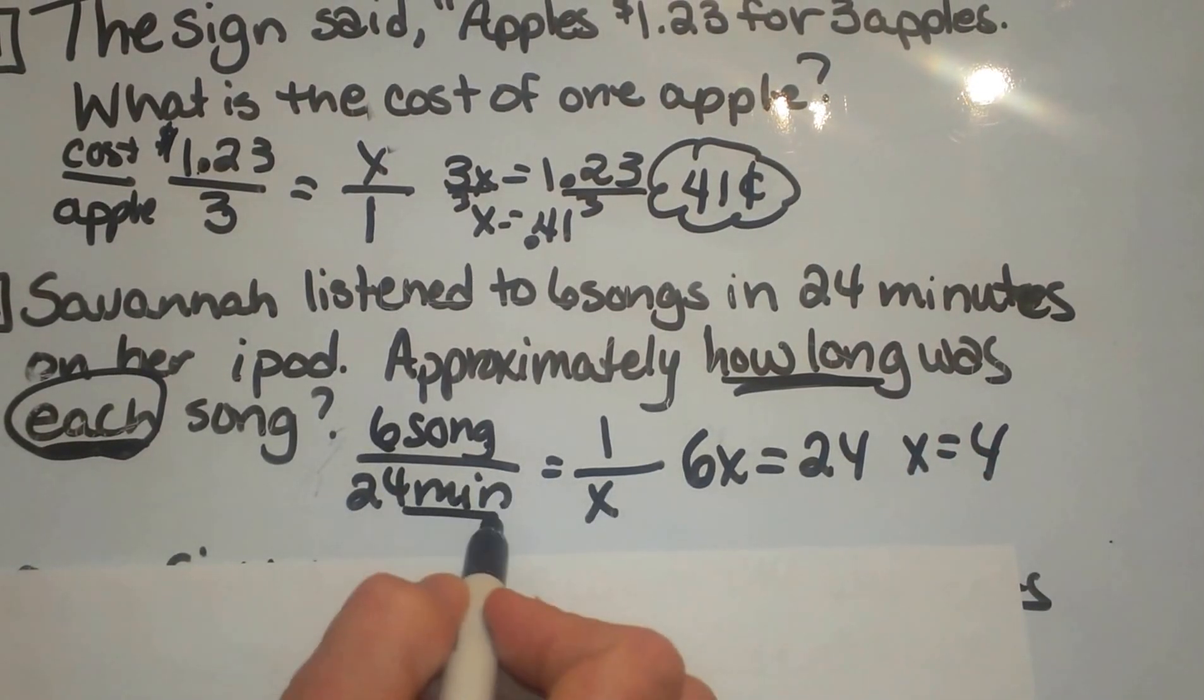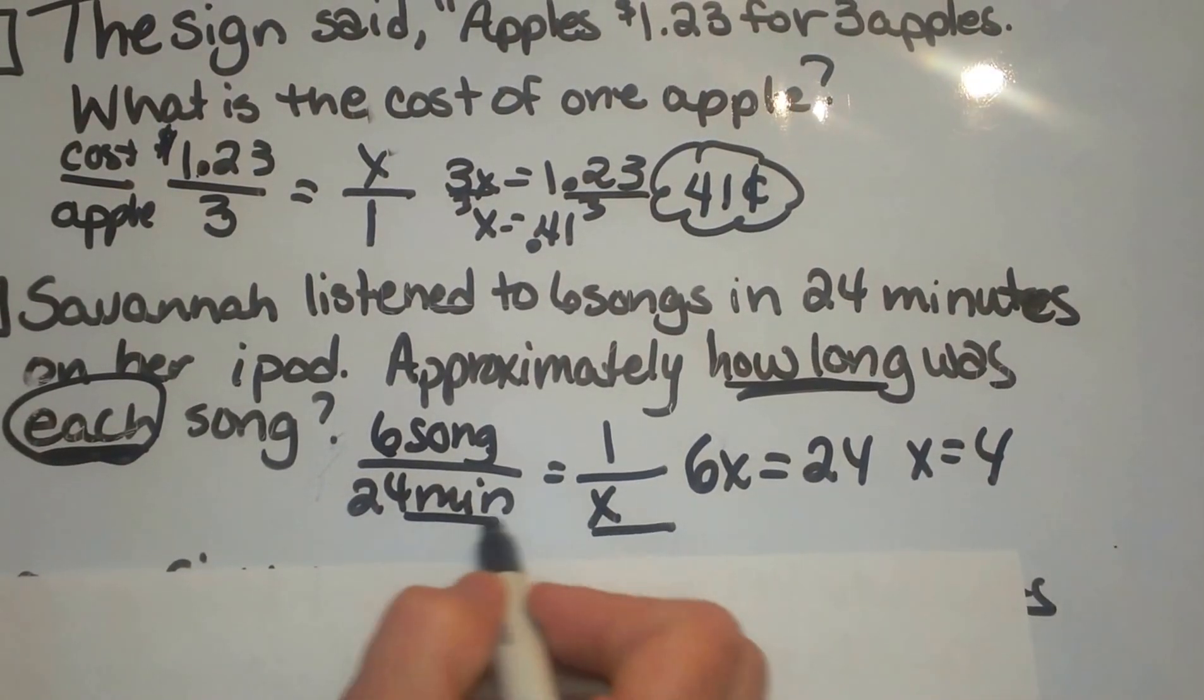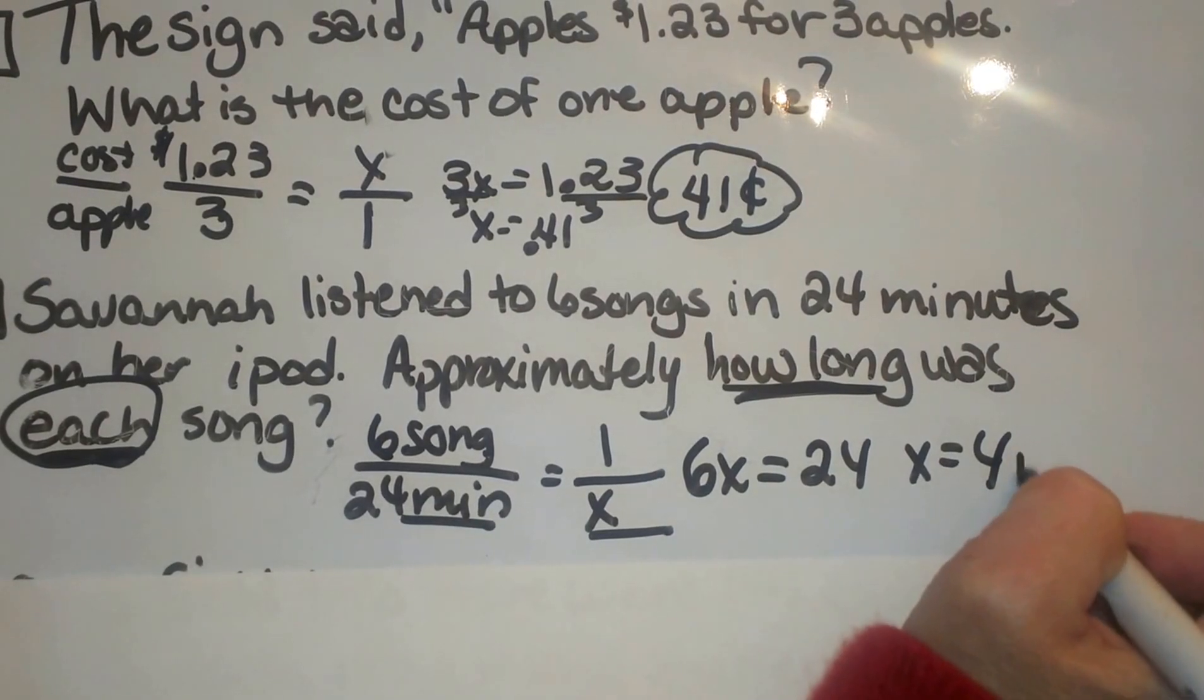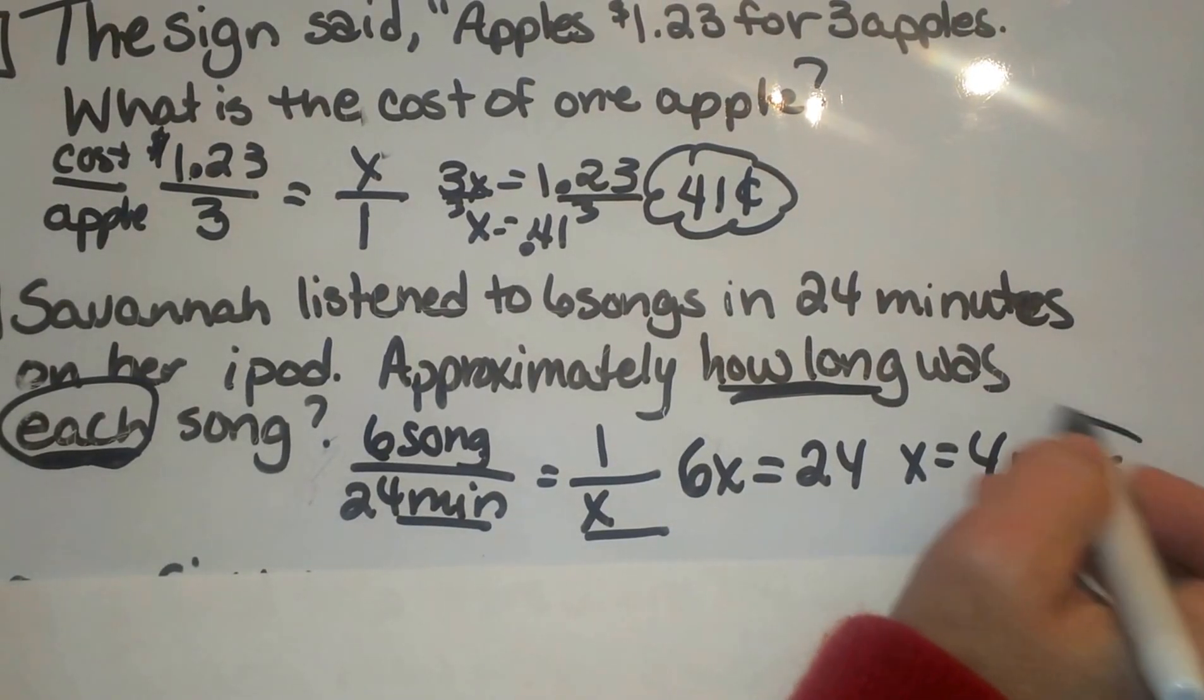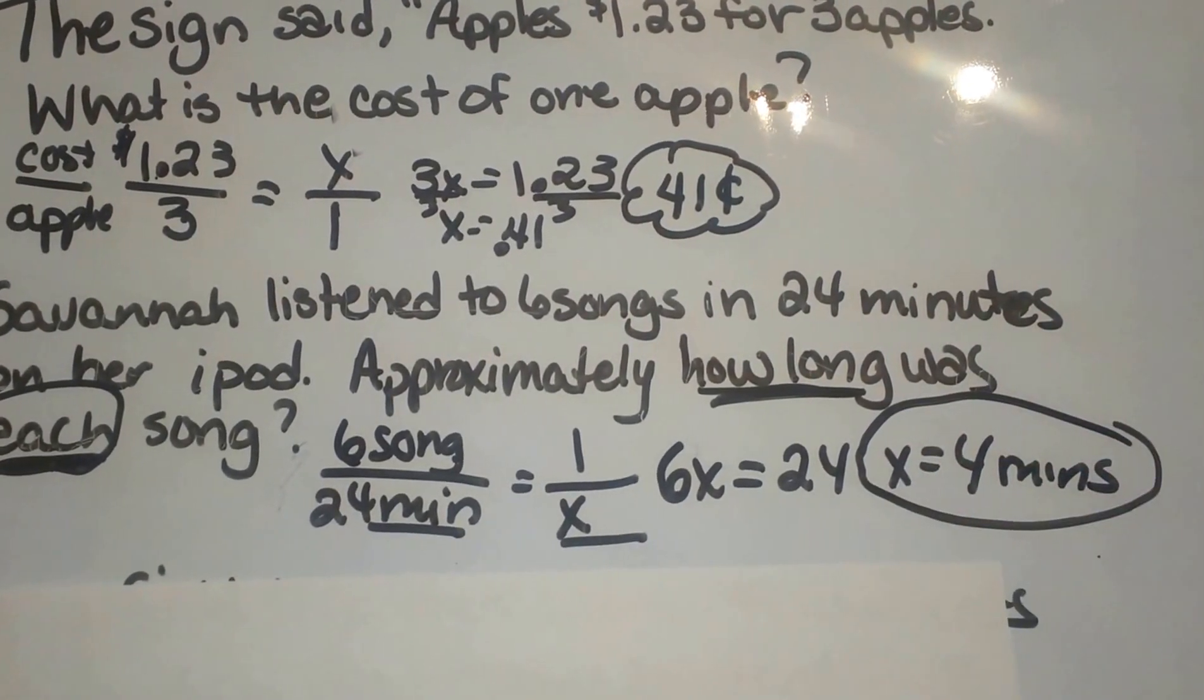Okay, our variable is on the bottom. So our unit on the bottom is minutes. So that is going to be 4 minutes. And that is how you solve that unit rate problem.